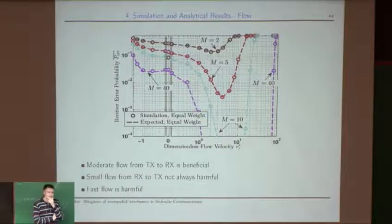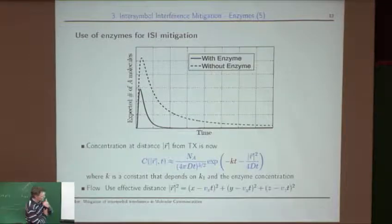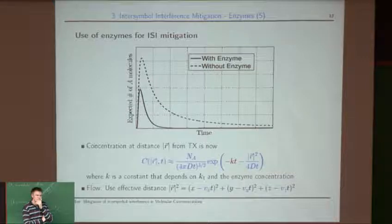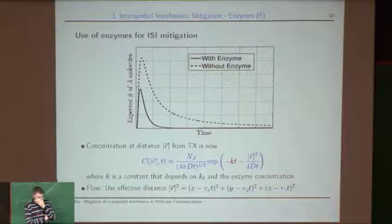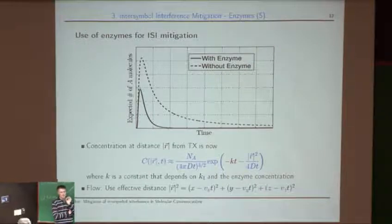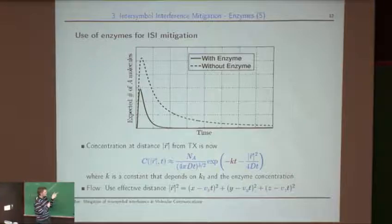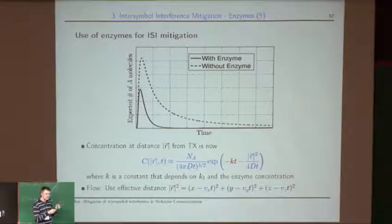Question: Can you adaptively vary the number of released molecules? Optimizing the number of molecules released is in some sense equivalent to adjusting the decision threshold. We looked at this in later work and it is still beneficial — you can combine it with the enzyme approach — though the speaker cannot recall which effect was more pronounced. Adaptively changing released molecules based on previously transmitted symbols is equivalent to changing the decision threshold.